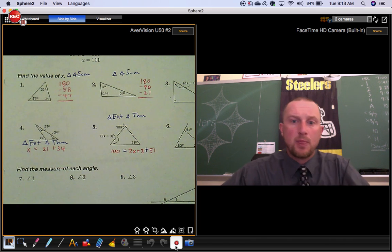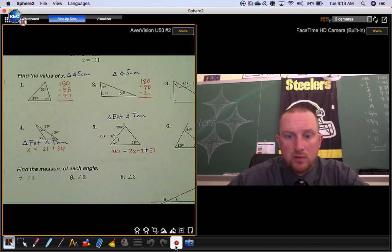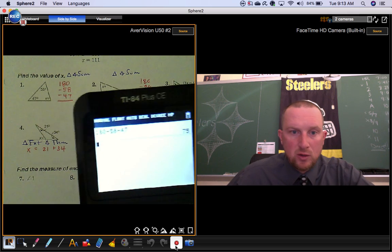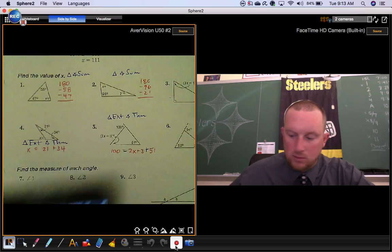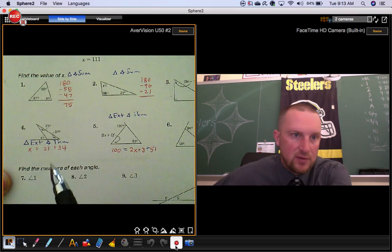We know triangles have 180 degrees. If you subtract 58 degrees and then subtract 47 degrees, you'll get what's left over. So that missing angle right there is 75 degrees.